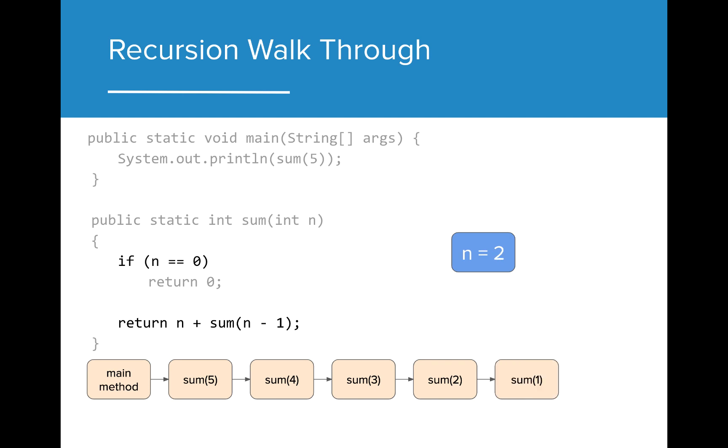This process continues as we get deeper and deeper into our stack. Remember, at this point, we have not returned anything. Each of our return statements has called another function, and until we get the return value for that function, we can't return for the previous function. Essentially, sum of 5 is waiting for sum of 4, which is waiting for sum of 3, etc.